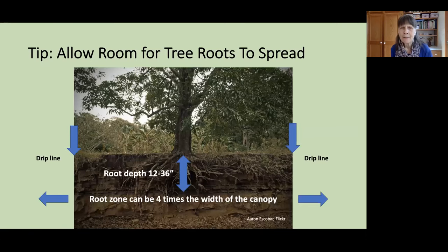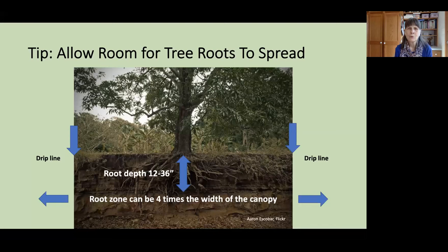An important tip when planting trees is to allow plenty of room for tree roots to spread. Most of the tree's roots will actually be in a soil depth of about one to three feet, but those roots will also grow laterally — at least to the drip line, which is the outer edge of the branches and canopy. The root zone can actually go well beyond the width of the canopy. So you're not going to want to plant a tree near a driveway or sidewalk — you want them to really have a lot of room to spread.